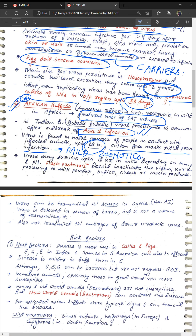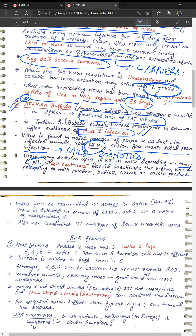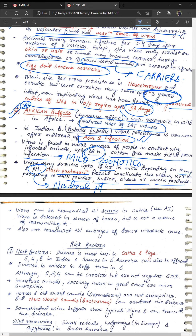The disease is mildly zoonotic but severe signs have not been reported in human beings. The virus may survive for 18 hours in milk depending on temperature and pH, surviving favorably at neutral pH — both acidity and alkalinity are detrimental. Flash pasteurization does not inactivate the virus, nor does processing of milk into products like milk powder, butter, cheese, and casein.